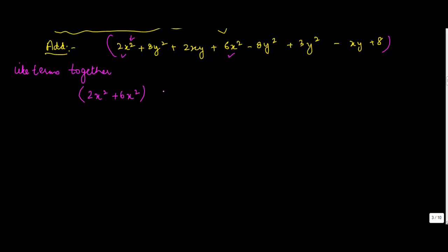Second, 8y². So this is also gone. Which is the other y² we have? We have -8y² and +3y².